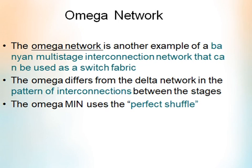First of all, what is omega network? Omega network is another example of a Banyan multistage interconnection network that can be used as a switch fabric. The omega network uses the perfect shuffle property.